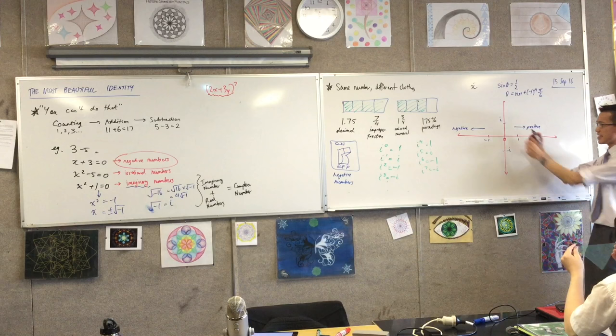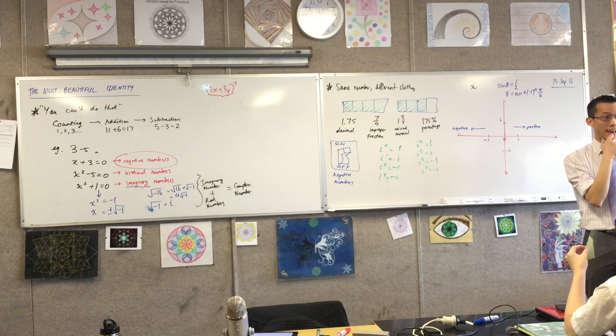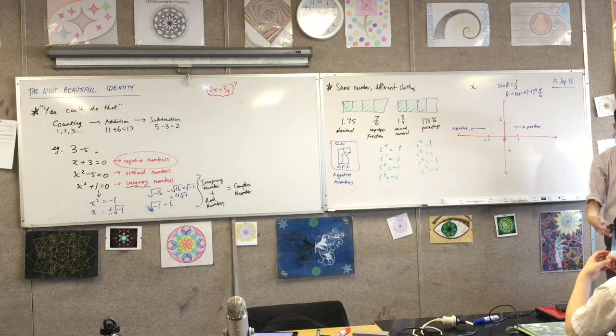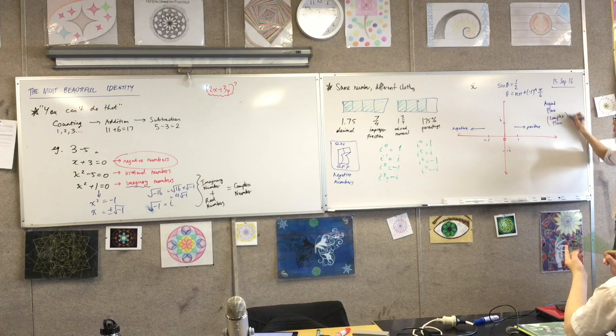Okay? So the idea of extending a number plane into a, sorry, a number line into a number plane, right? It's something that was pioneered by a guy named Jean-Robert Argand, who was, I think he was Swiss. So just like we name this thing when it's like, you know, x and y's, we call it the Cartesian plane, this thing is often called the Argand plane. Because it's got complex numbers on it, we call it, I call it the complex plane.